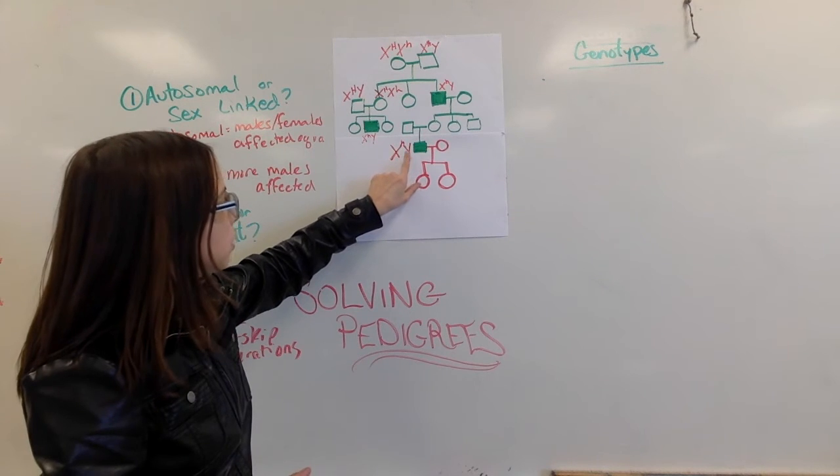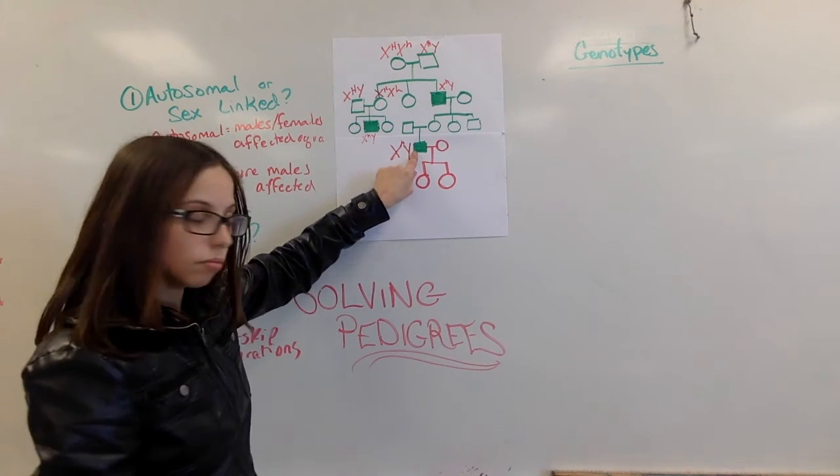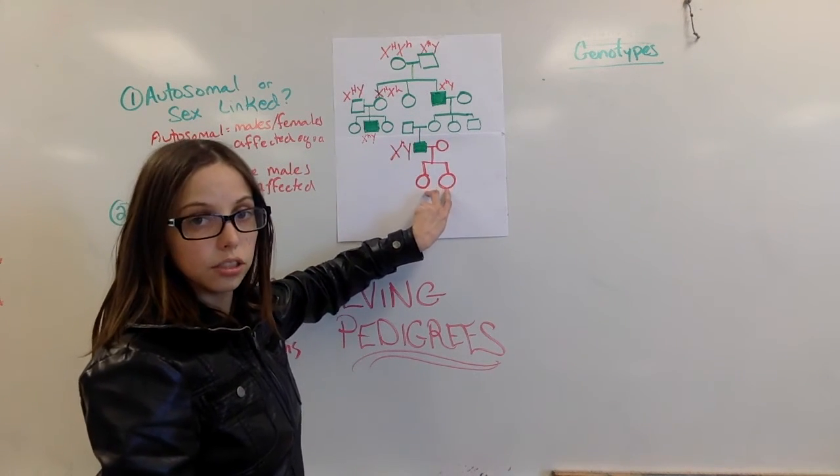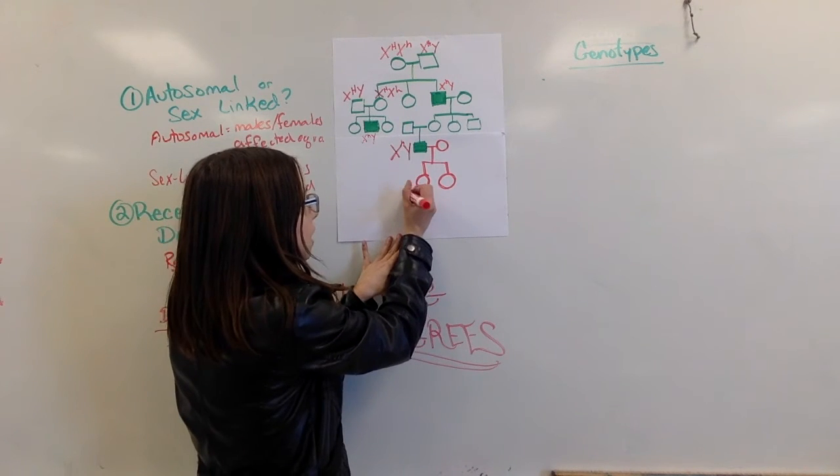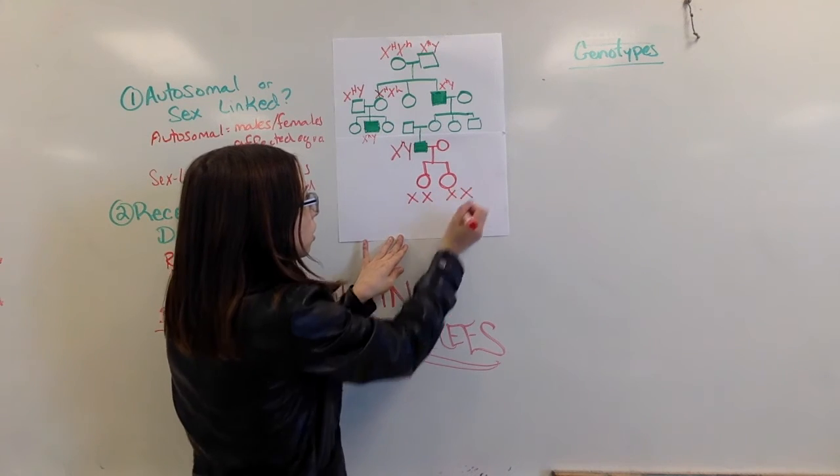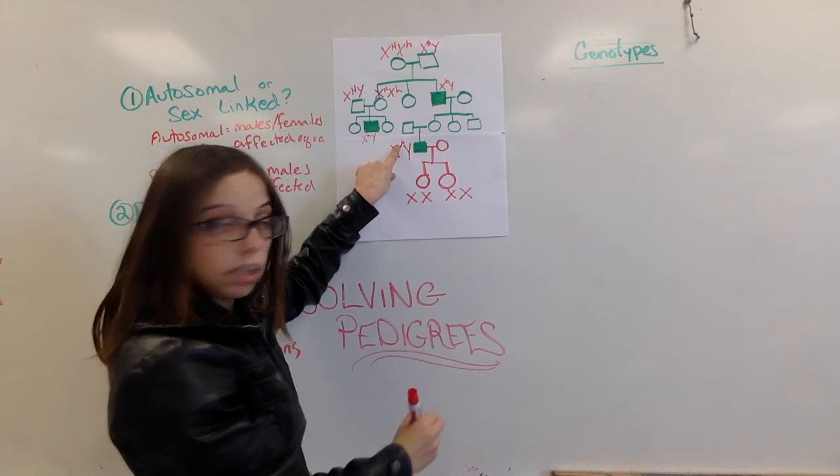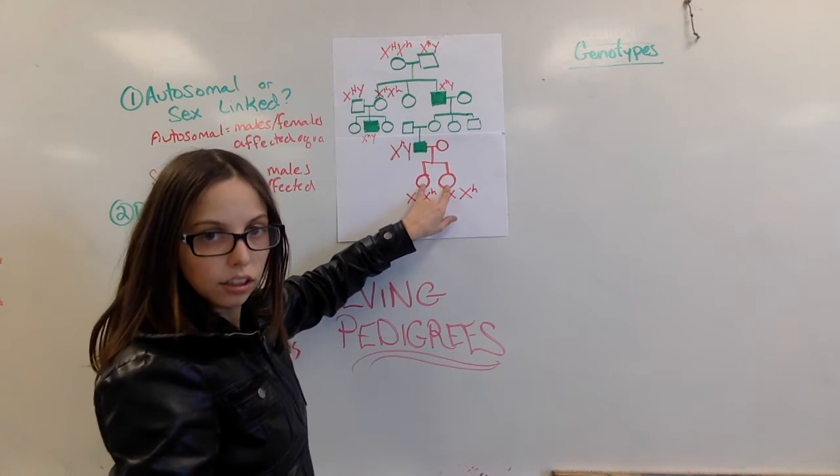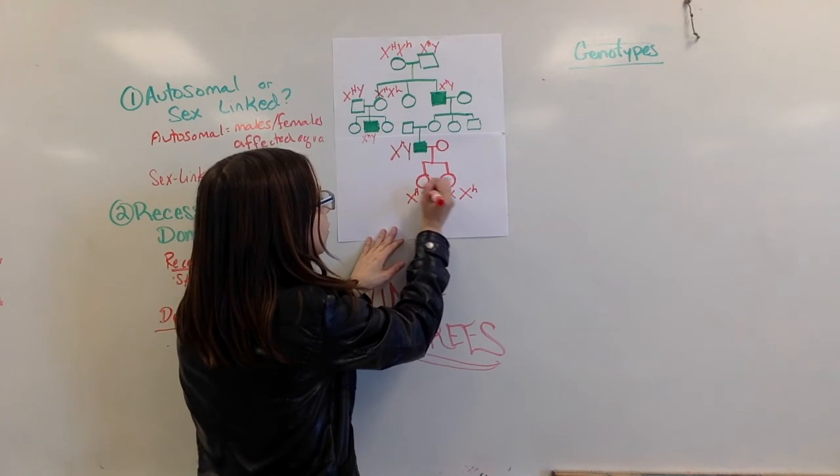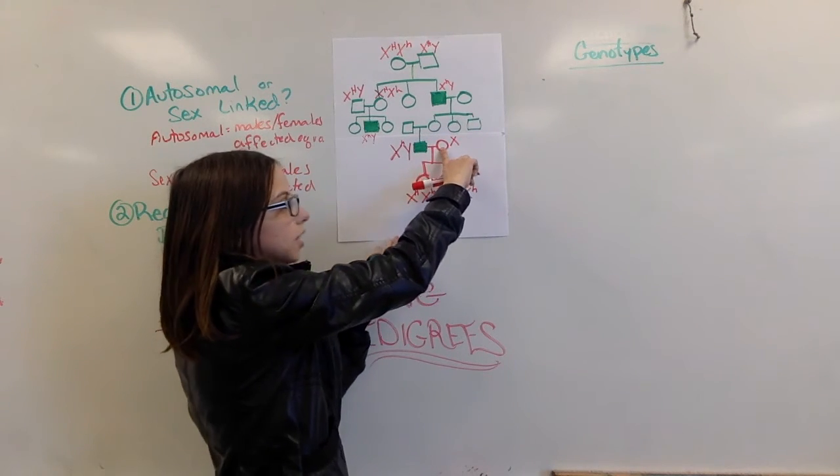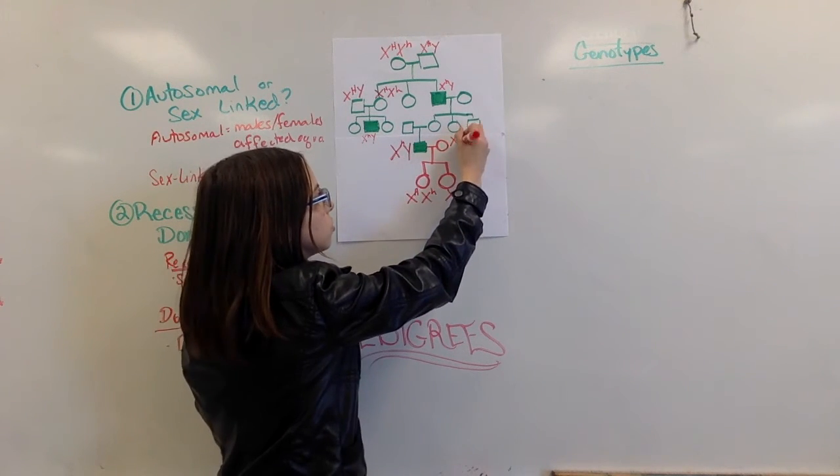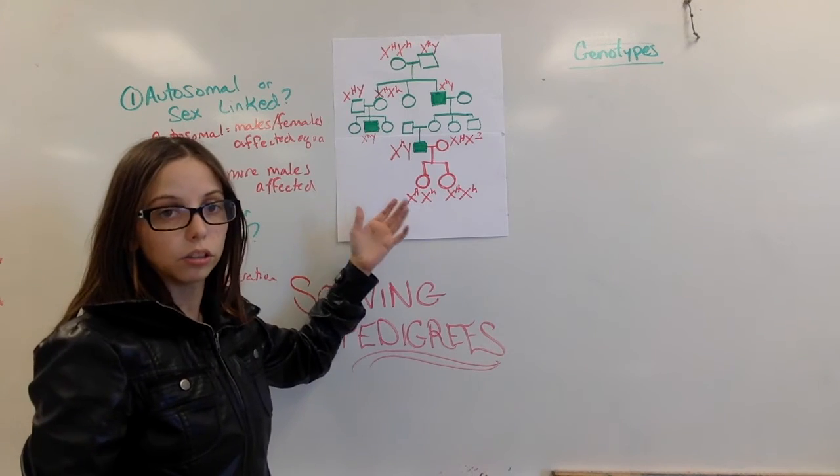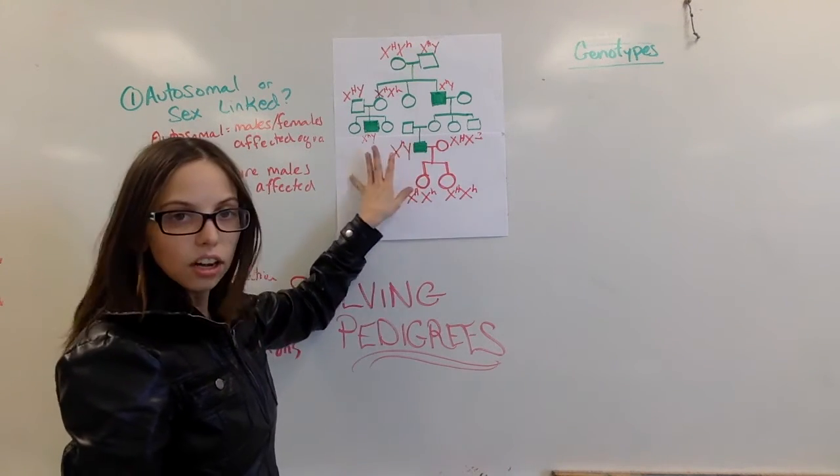When you have a male who is affected, he will automatically pass one of these recessive alleles along to his daughters. Because remember, females are always XX. When X comes from dad, this is the only X that's there. And it's got a little recessive allele on it. So we can fill that in. Because they're not affected, they have one dominant allele that came from mom. And we can see that she, because she's not affected either, she must also carry the dominant allele. What this one is, we're not sure we'd have to look at her family pedigree and see if there's any traces of hemophilia there.